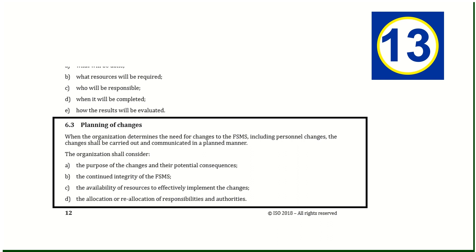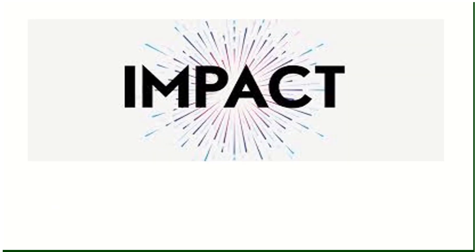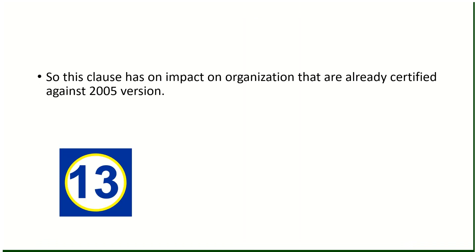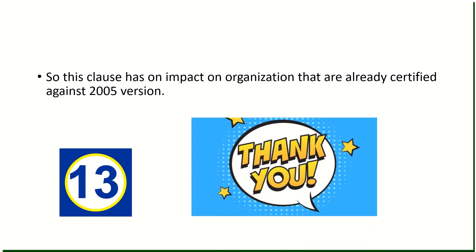Change number thirteen: a new clause titled 'control of changes' has been added as clause 6.3. It requires that when an organization wants to change anything — personnel, management, processes, or products — the change should be carried out in a planned manner. Impact: although this clause applies to already-certified organizations, most were already doing this. Organizations already ensure they consider the purpose and consequences of changes, maintain the integrity of the food safety management system, and ensure effective implementation. So this ultimately has no such impact on organizations already certified against the 2005 version.